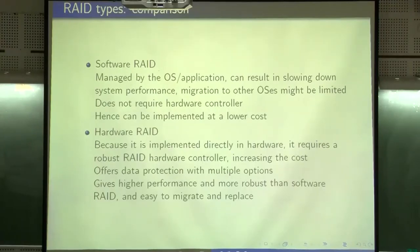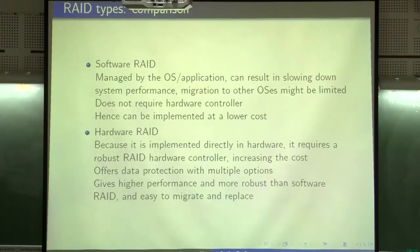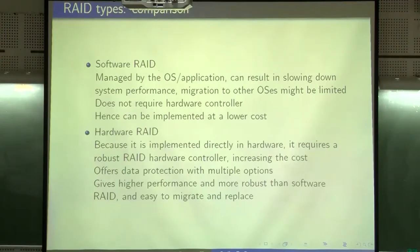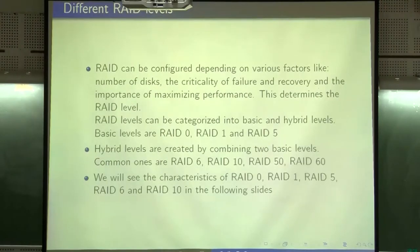Software RAID is managed by the operating system; it can slow down system performance and migration to other operating systems may be limited, but it does not require a hardware controller and can be implemented at lower cost. Hardware RAID is implemented directly in hardware, requires a robust RAID hardware controller, increases cost, but offers data protection with multiple options, higher performance, robustness, and easy migration. RAID can be configured depending on factors like number of disks, criticality of failure recovery, and maximizing performance — this determines the RAID level.